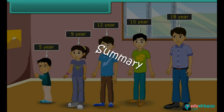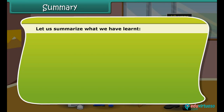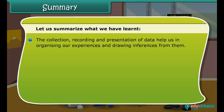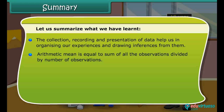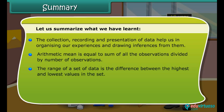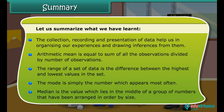Summary: Let us summarize what we have learned. The collection, recording, and presentation of data help us in organizing our experiences and drawing inferences from them. Arithmetic mean is equal to the sum of all the observations divided by number of observations. The range of a set of data is the difference between the highest and lowest values in the set. The mode is simply the number which appears most often. Median is the value which lies in the middle of a group of numbers that have been arranged in order by size.